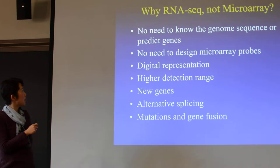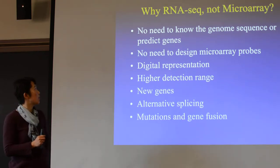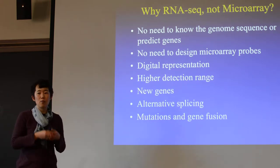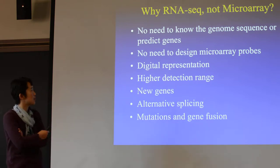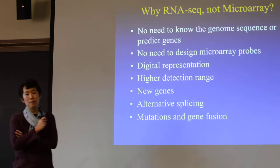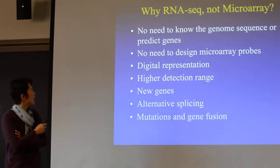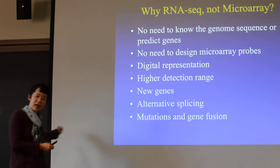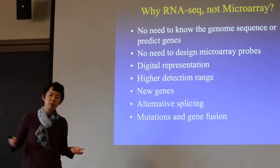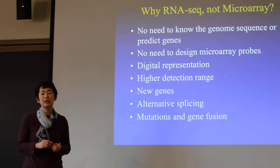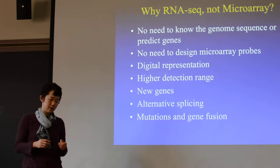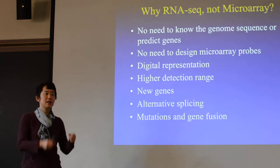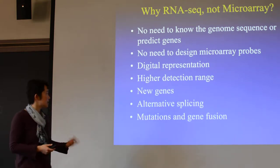The advantage of RNA-seq over microarrays is you do not need to know the genome sequence or the predicted genes or predicted transcripts. You just isolate the RNA — whatever it is, you're going to see it — and then decide what they are. You do not need to design microarray probes ahead of time. It's a digital representation: every time you see a read, it is definitely some molecule that came from your original sample.